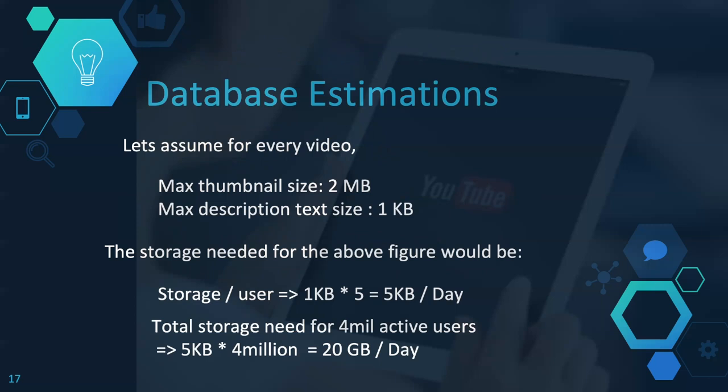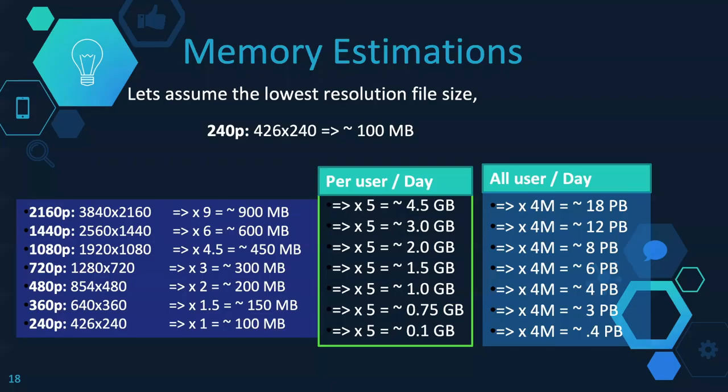For database estimation: assume maximum thumbnail size is 2 MB and maximum description text size is 1 KB per video. Storage per user = 1 KB × 5 uploads = 5 KB per day. Total storage for 4 million active users = 20 GB per day.